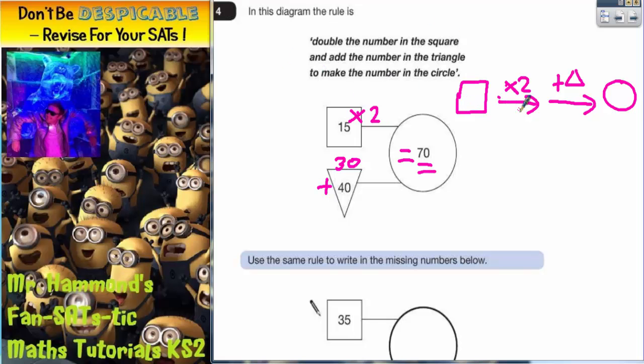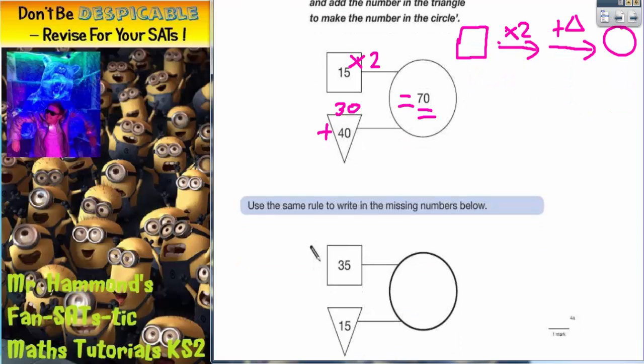Start with the number in the square, double it, add on the number in the triangle to make the number in the circle. So it works. Now let's have a look at what we've got to do. It says use the same rule to write in the missing numbers below. So if I start with the number in the square, which is 35,